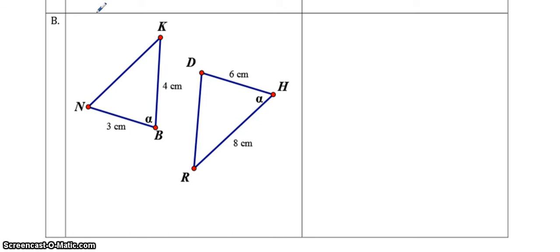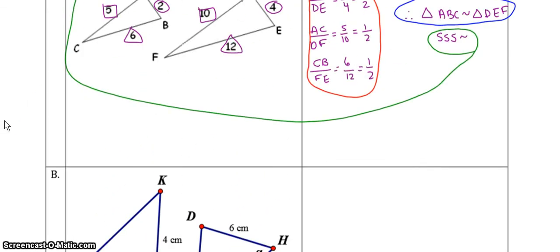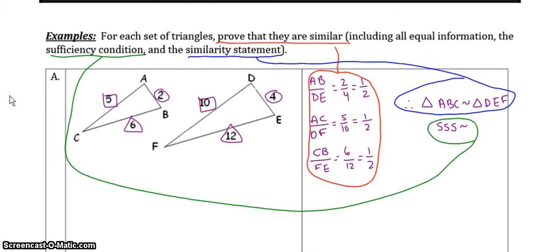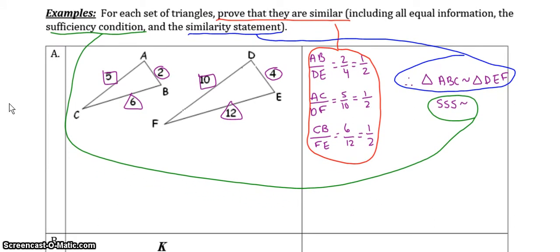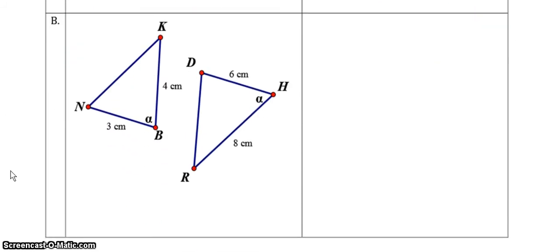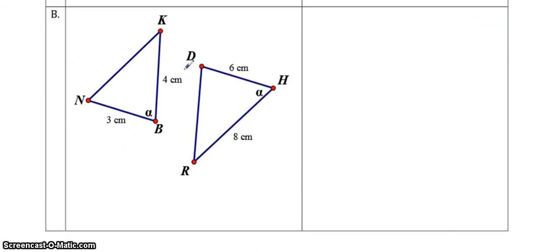Welcome back and thanks for joining us for part 2 of the video. We're continuing with this example where we are proving that a set of triangles are similar. With example B, if you take a look at the two triangles, you've been given two sides and an angle in between, so that should tell you that we're going to be using the side-angle-side similarity sufficiency condition.